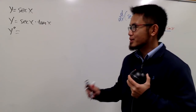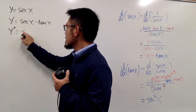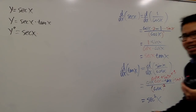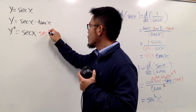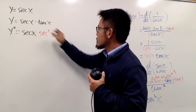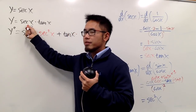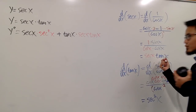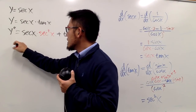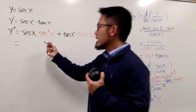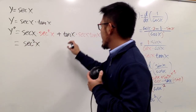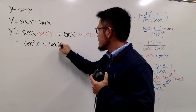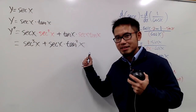Now we come back and use the product rule for y″. We keep the first function, secant x, and multiply by the derivative of the second — the derivative of tangent x is secant squared x. Then we add the second function, tangent x, multiplied by the derivative of the first, which is secant x tangent x. Simplifying: secant x times secant squared x is secant to the third power x, and tangent x times tangent x is tangent squared x. So y″ equals secant cubed x plus secant x tangent squared x.